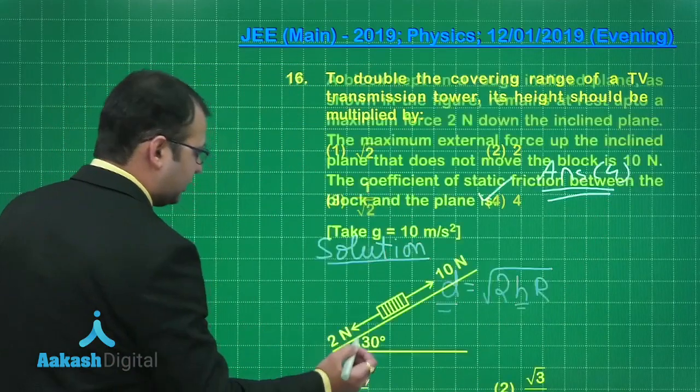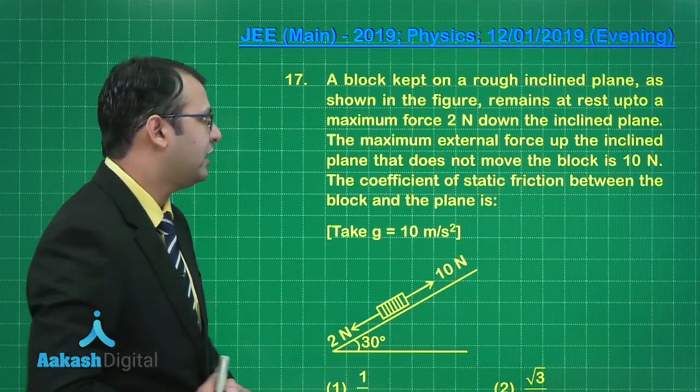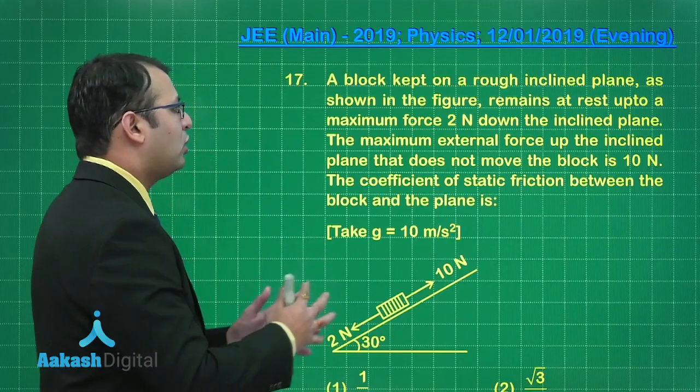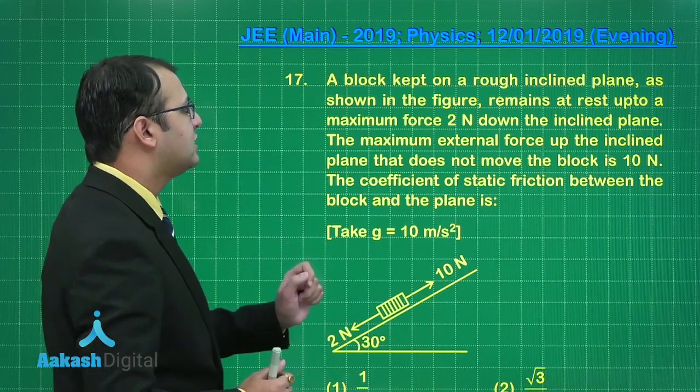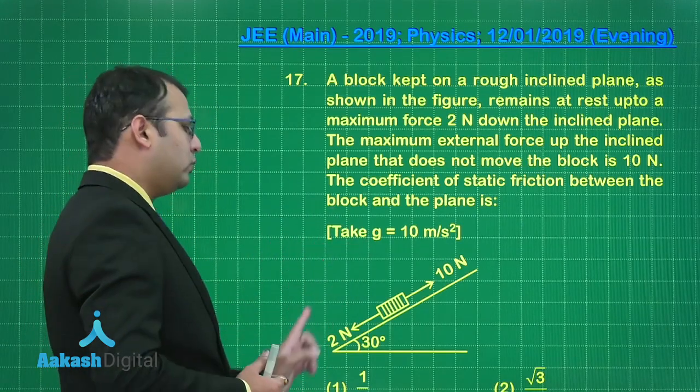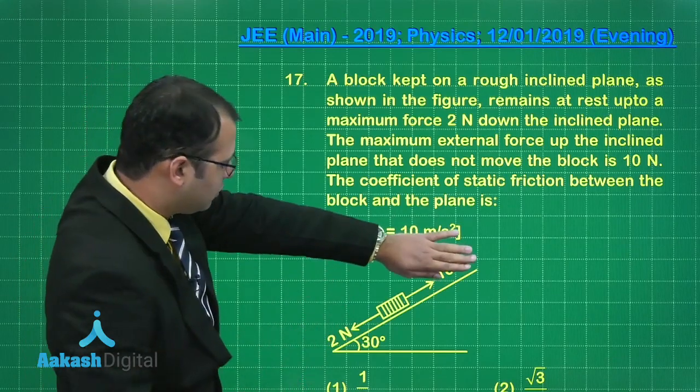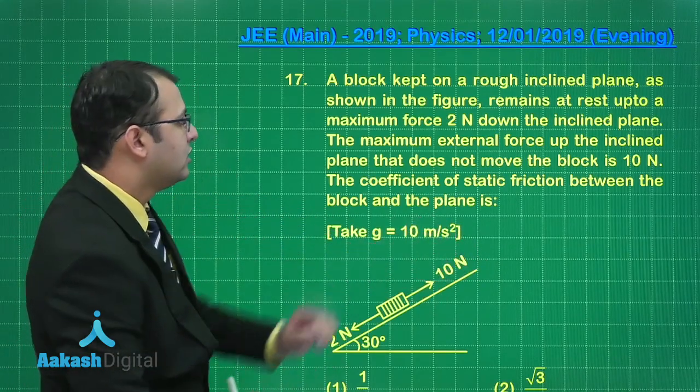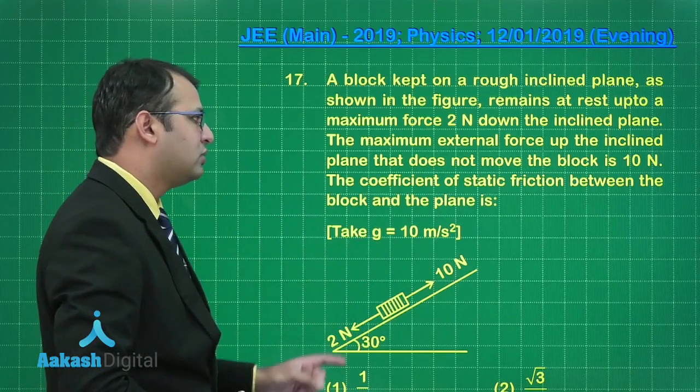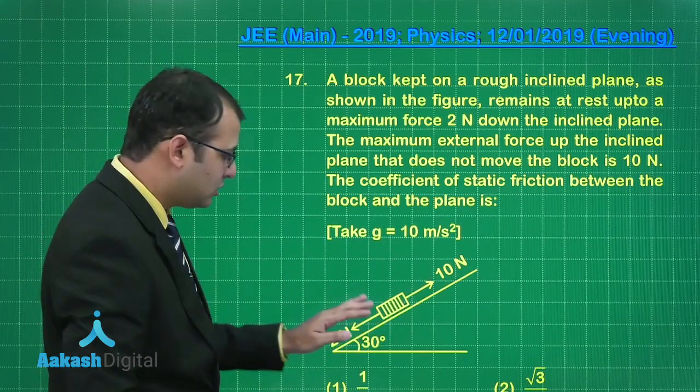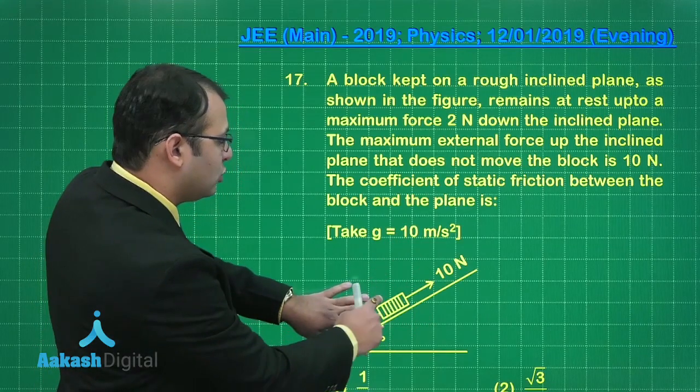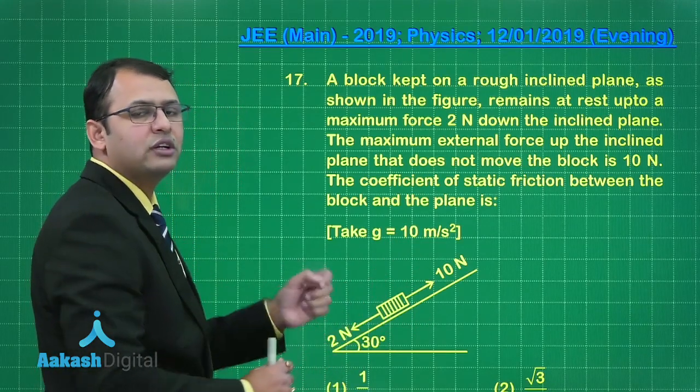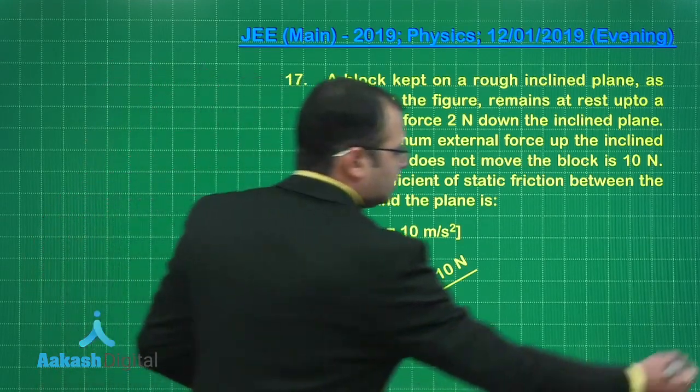Let's move on to question number 17. This question belongs to mechanics. A block is kept on an inclined plane and it remains at rest up to a maximum force of 2 Newton down the inclined plane. Then the maximum external force up the inclined plane of 10 Newton was applied and it still does not move. We need to find the coefficient of friction.